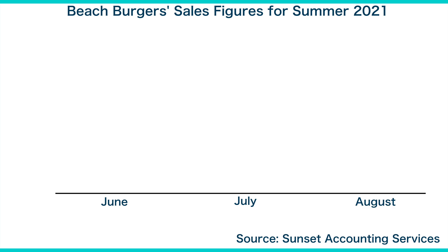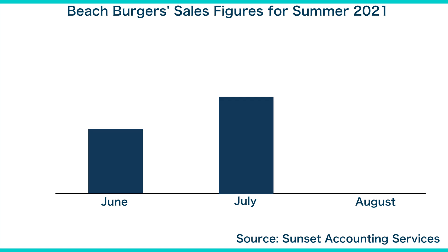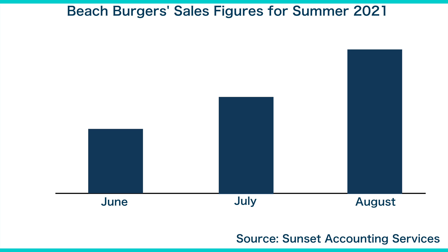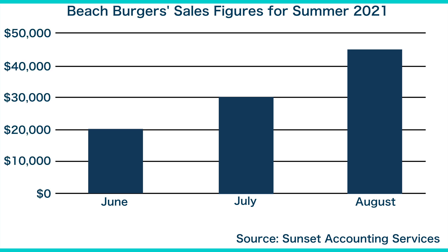According to Sunset Accounting Services, Beach Burgers had $20,000 worth of sales in June, $30,000 in July, and $45,000 in August. So the scale on the y-axis will start at $0 and continue to $50,000 in intervals of $10,000.